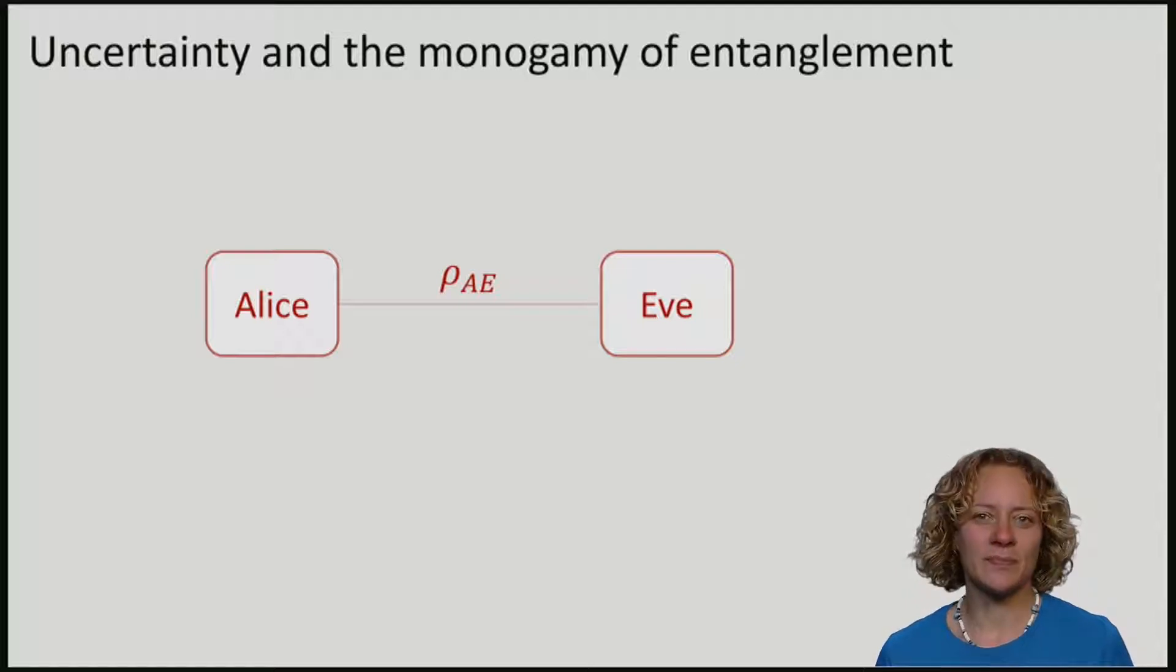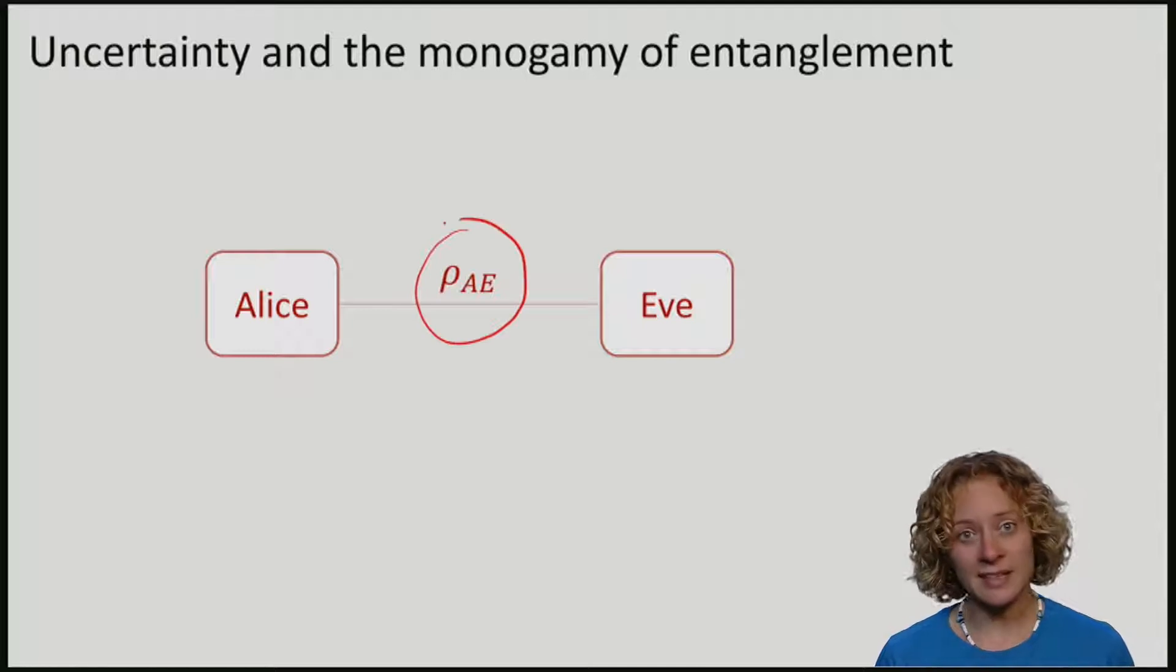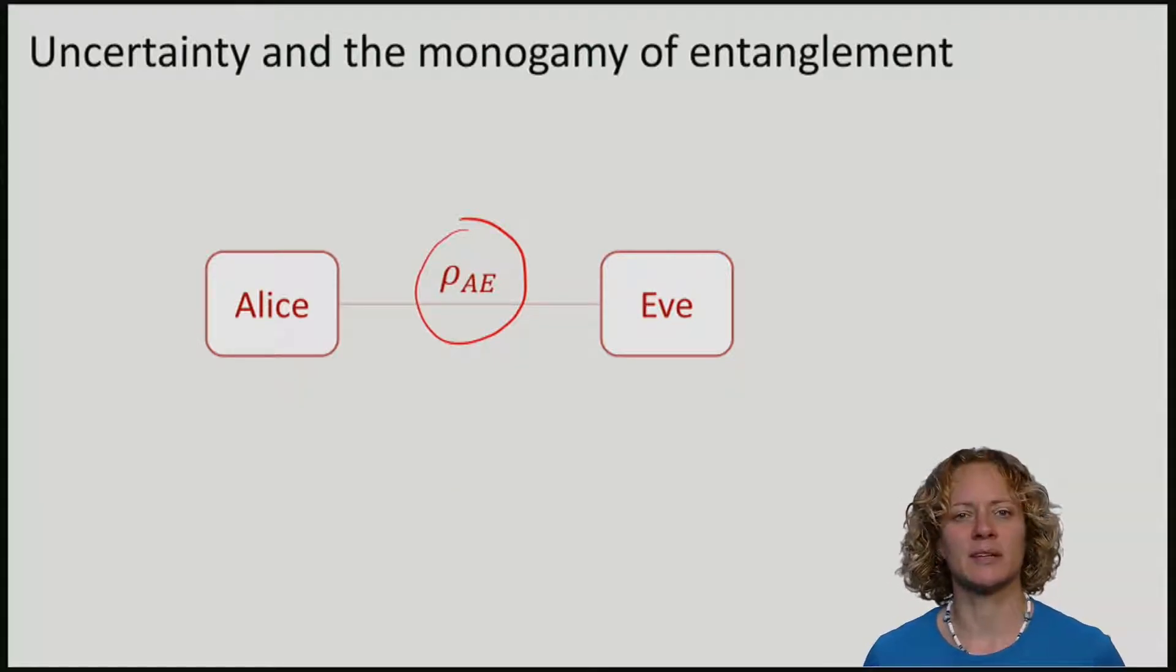We have seen that Eve is very uncertain if she has little entanglement with Alice. But how can we be sure that Eve really has little entanglement with Alice and hence is very uncertain?